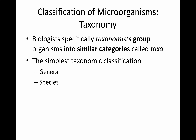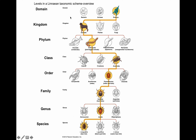The field of classification is referred to as taxonomy. Scientists called taxonomists group organisms into similar categories called taxa. The simplest taxonomic classification is the genus and the species. You may remember from a biology class the full hierarchy: kingdom, phylum, class, order, family, genus, species. For simplicity, we focus on just the genus and the species in this class.